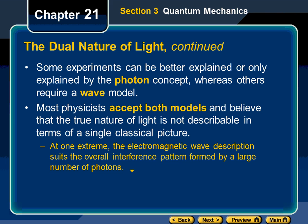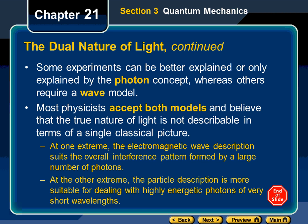At one extreme, the electromagnetic wave description suits the overall interference pattern formed by a large number of photons — they move guided by a wave and act in interference patterns. At the other extreme, the particle description is more suitable for dealing with high-energy photons. When do we have high-energy photons? When the frequency is higher.